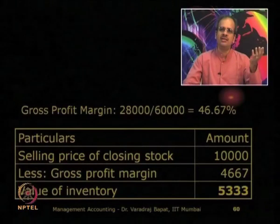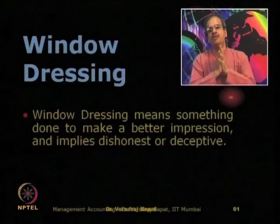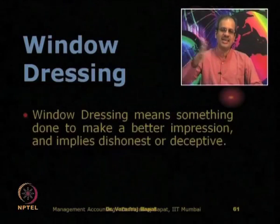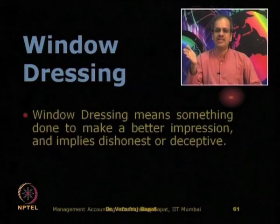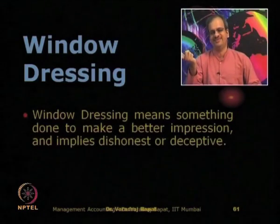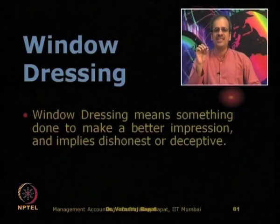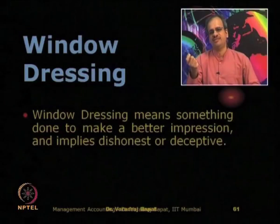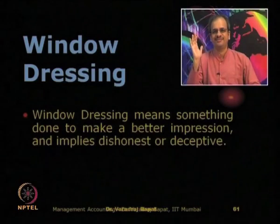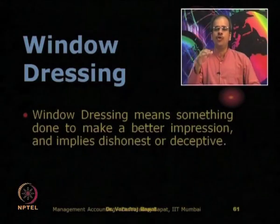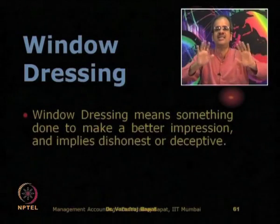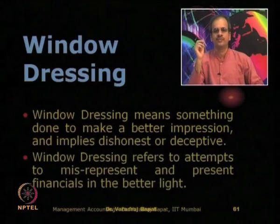Now let us go to a new concept known as window dressing. Window dressing means — this is totally new and nothing to do with inventory. We are taking it here because many times stock and depreciation are manipulated to do window dressing. Window dressing is something done to make a better impression — it implies dishonest or deceptive presentation. These are attempts to misrepresent and present the financial position in a better light.